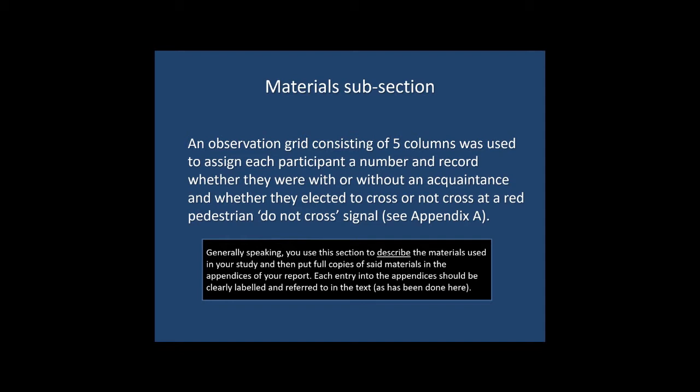If we take an example of a study that involved a questionnaire, in your materials subsection you'd want to provide an overview of that questionnaire — giving information like the title and a citation for it. You'd also indicate how many items the questionnaire consisted of, how the participant would respond to it — for example, using a Likert scale from one to five — then provide some example items before referring to an entire copy of the questionnaire in your appendices.